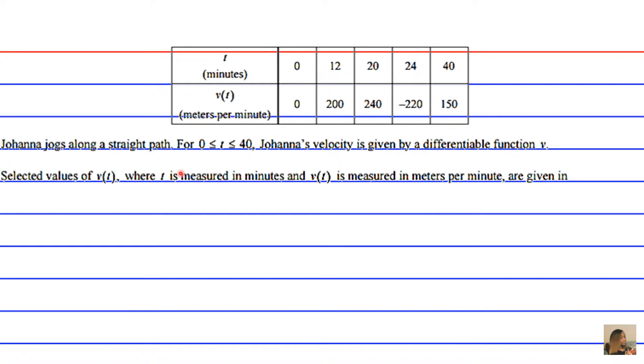Johanna's velocity is given by a differentiable function v. Selected values of v of t where t is measured in minutes and v of t is measured in meters per minute are given in the table above. So here are selected values of t and their corresponding values of v of t.